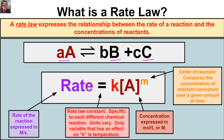To write a rate law for this chemical reaction, we say that the rate equals the rate law constant k times the concentration of A raised to some power m, where m is the order of our reaction. The order compares the concentration of reactant consumed over a given amount of time.